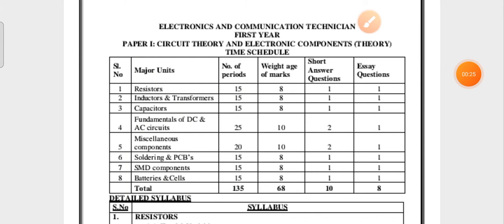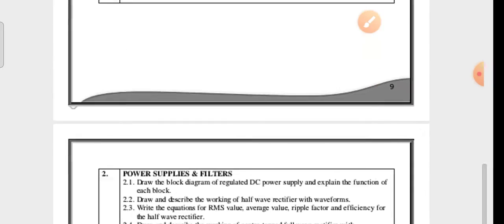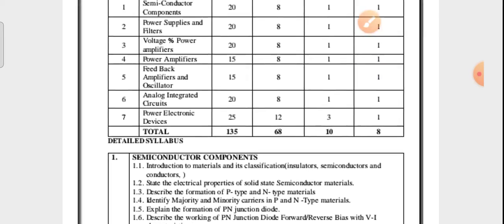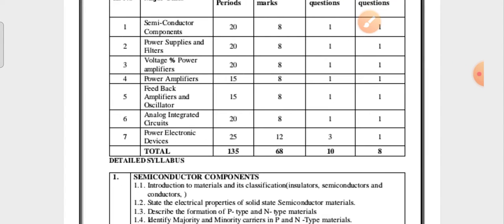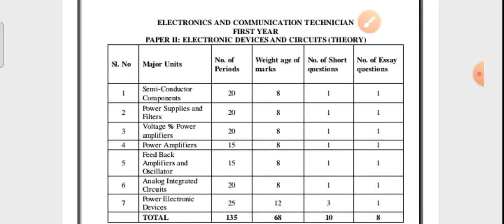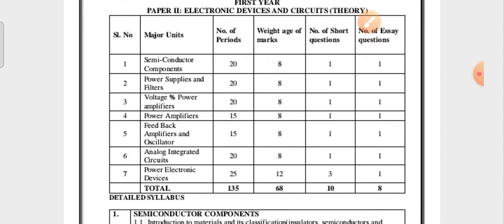We finished circuit theory and electronic components — that is the first paper for the ECT students. ECT is nothing but Electronics and Communication Technician for the first year students. Now we are moving on to the second paper, which is Electronic Devices and Circuits. I will discuss about the syllabus, weightage of the marks, the 30% deleted content, and overall the 70% syllabus and model paper also.